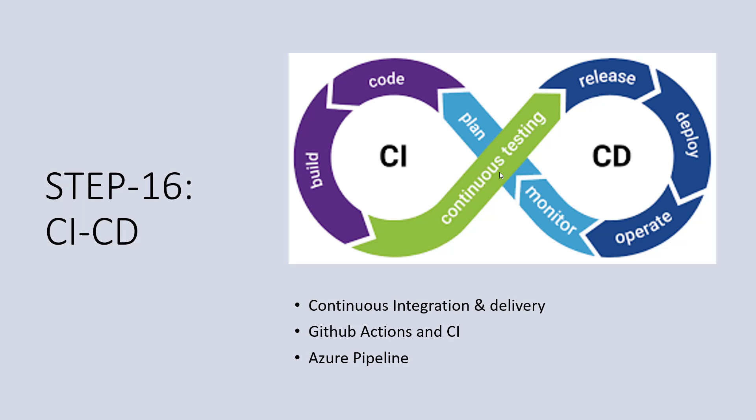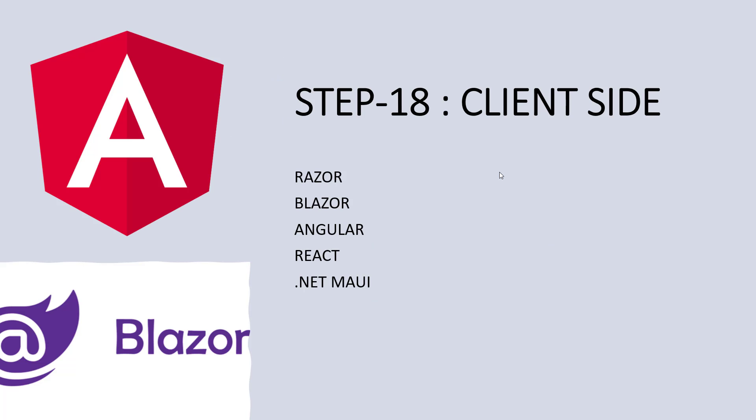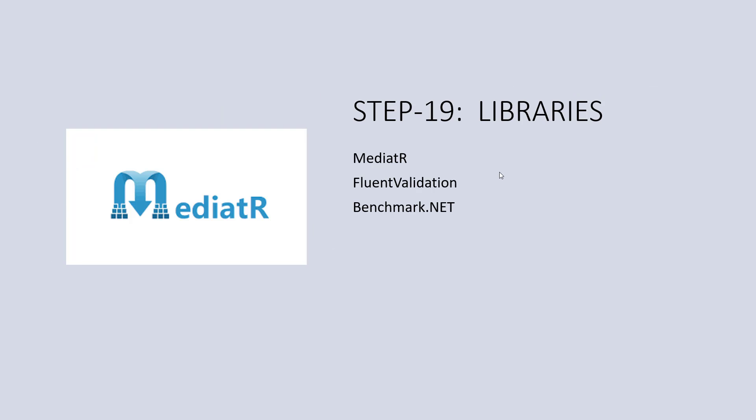Step 16 is CI/CD pipelines — continuous integration and delivery — using GitHub Actions and Azure Pipelines. Step 17 is design patterns: creational, structural, and behavioral. Step 18 is client-side technologies including Razor, Blazor, Angular, React, and .NET MAUI.